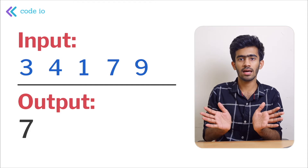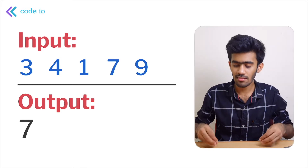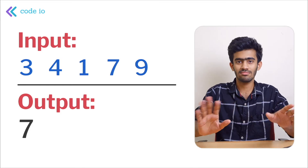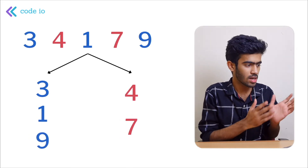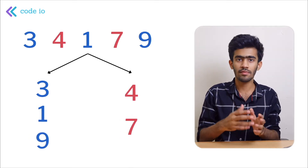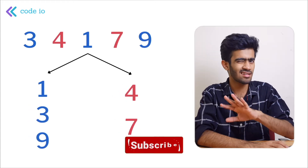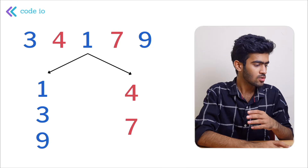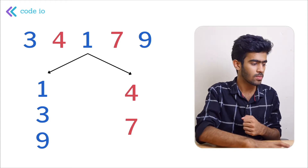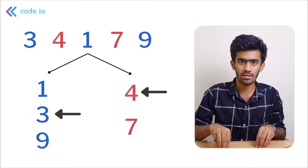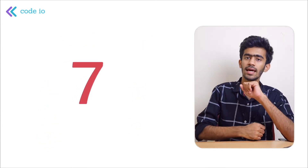We find the second largest element in both these arrays and add them. So let's say the array is 3, 1, 9, 4, 7. 3, 1, 9 are at even indexes, and 4, 7 are at odd indexes. So sorted: even array is 1, 3, 9 and odd array is 4, 7. The second largest from even is 3, the second largest from odd is 4. So 4 plus 3 is 7, and that is the answer for this question.